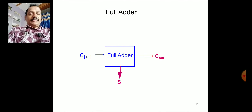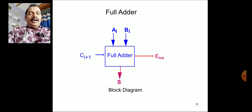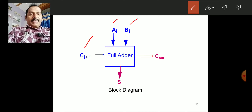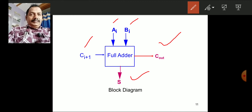The full adder is represented as a block with inputs A_i and B_i, which are added along with a carry-in from the previous stage, giving A plus B plus C_in. Three bits are added and you get outputs: sum and carry-out. This is the full adder block diagram.